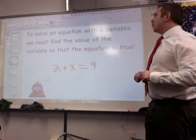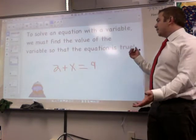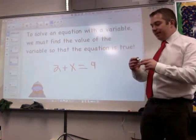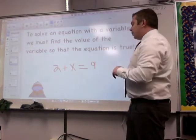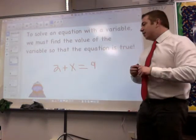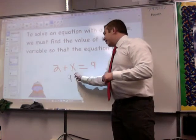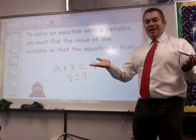So let's start off by solving an equation with a variable. We must find the value of that variable so that the equation is true. Right here I have 2 plus x equals 9. To make each side balanced, I have to get both sides to equal 9. So 2 plus what equals 9? Well, 7. So if I have 2 plus 7 equals 9, I basically have 9 equals 9. It's now an equation because both sides are balanced. They equal each other.